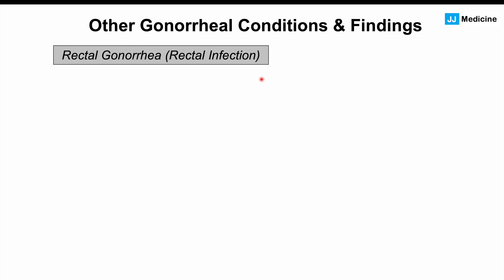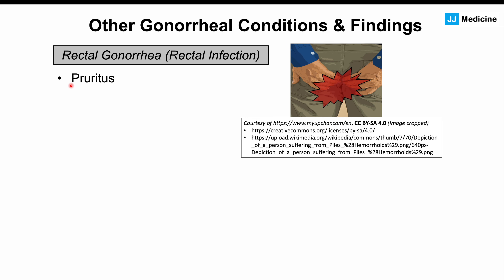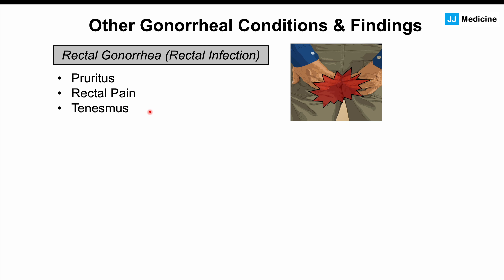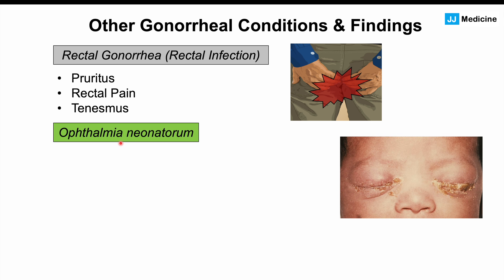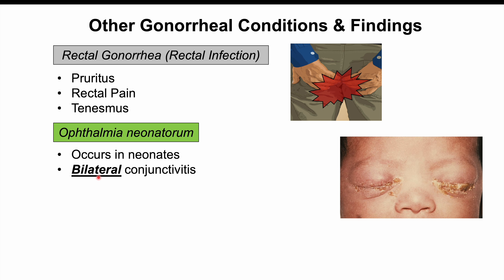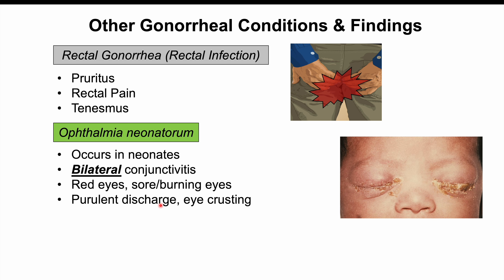Other gonorrheal conditions include rectal gonorrhea, seen in male-to-male sexual transmission, presenting with pruritus, rectal pain, and tenesmus — the feeling of needing to defecate without actually needing to. Ophthalmia neonatorum occurs in neonates via vertical transmission during vaginal delivery, where the conjunctiva of the infant's eyes become infected, leading to bilateral conjunctivitis with red, sore, burning eyes, purulent discharge, and eye crusting. Neonates are also at risk for systemic infection.